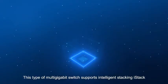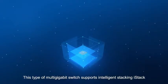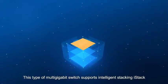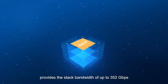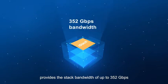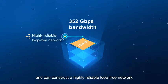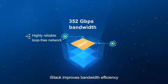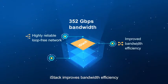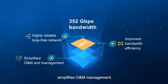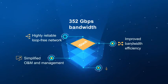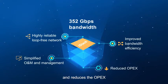This multi-gigabit switch supports intelligent stacking. iStack provides stack bandwidth of up to 352 gigabits per second and can construct a highly reliable loop-free network. iStack improves bandwidth efficiency, simplifies O&M management, and reduces OPEX.